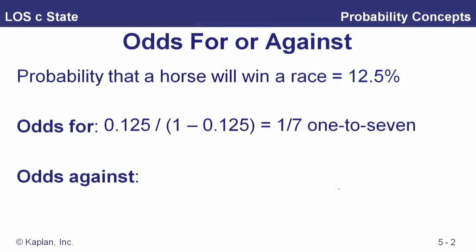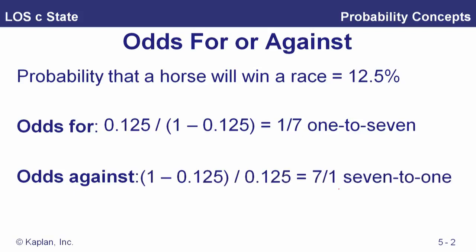We also have odds for or against. Using a horse race example: if the probability that a horse will win is 1 in 8 — that's 0.125, or 12.5% — then the odds for winning are 1 to 7. The probability of winning is in the numerator and the probability of not winning, which is 7 out of 8, is in the denominator. The odds against are just the opposite: 7 to 1 against versus 1 to 7 for.